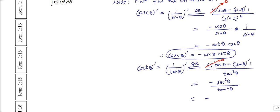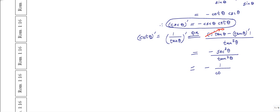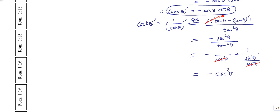We know that secant squared is one over cosine squared theta, and one over tangent squared theta equals sine squared theta over cosine squared theta by definition. So we have minus one over cosine squared theta times sine squared over cosine squared theta, and the cosine squareds cancel, leaving us with minus one over sine squared theta, which is minus cosecant squared theta.